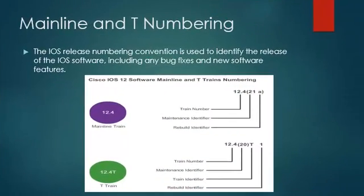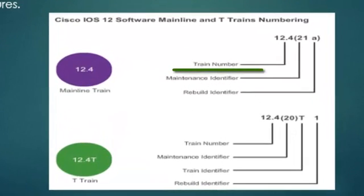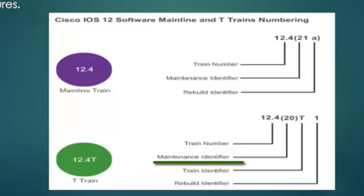The IOS release numbering convention is used to identify the release of IOS software, including any bug fixes and new software features. The software release numbering scheme for a mainline train is composed of a train number, a maintenance identifier, and a rebuild identifier. The release for a T-Train is composed of a train number, a maintenance identifier, a train identifier, and a rebuild identifier.